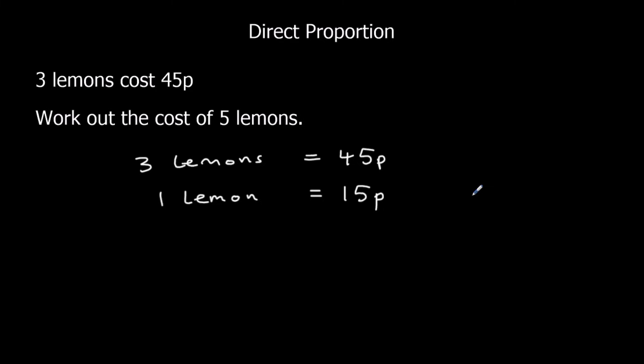So to work out the cost of 5 lemons, I can times both sides by 5. So if I divide it by 3, divide both of them by 3, then I can multiply them both by 5.